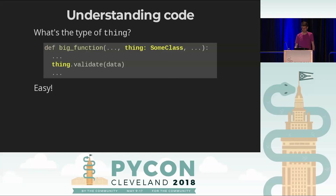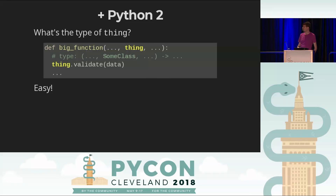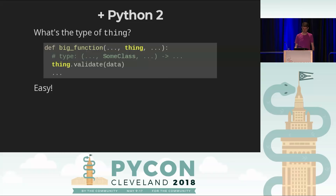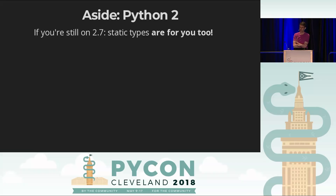If you do that, then when I go to understand the code and ask what type something is, the search terminates at depth zero — it's right there at the top of the function. This makes things much, much easier. That syntax is for Python 3 only, but if you're in Python 2, there's a syntax that works just as well — it doesn't look as nice, but it works. Static types are for Python 2 as well.